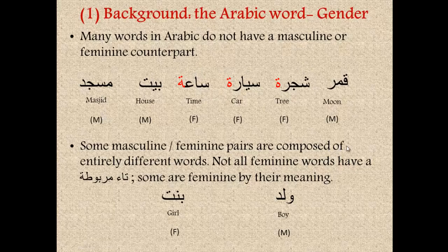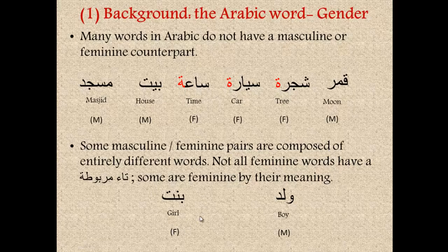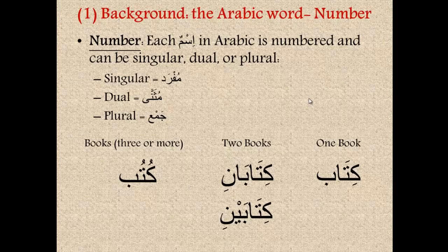Some masculine-feminine pairs are composed of entirely different words. For example, the word walad, meaning boy, has the opposite bint in Arabic, meaning girl. Notice how we did not add a tamarbutah to walad to get waladah — it's just bint. And not all feminine words have a tamarbutah; some are feminine by their meaning. The word bint does not have a tamarbutah at the end, but it is feminine because we understand the word is feminine by meaning.